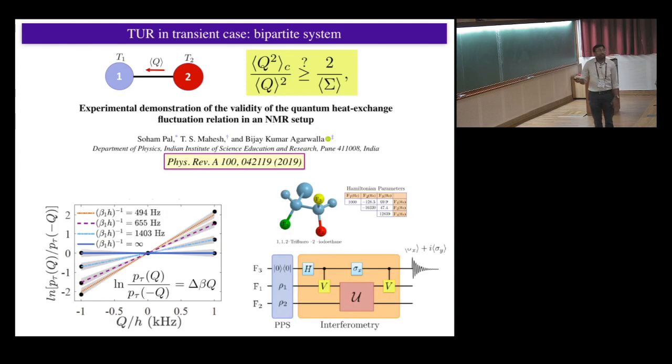So how do you measure these guys in experiment? One thing you can do is look at the distribution of this Q, P of Q. And that is one way to get these guys, Q squared and Q. We recently performed an experiment where we actually measured P of Q, and we verified this fluctuation symmetry. But this is actually a hard way to get these cumulants. It's not very well converged.